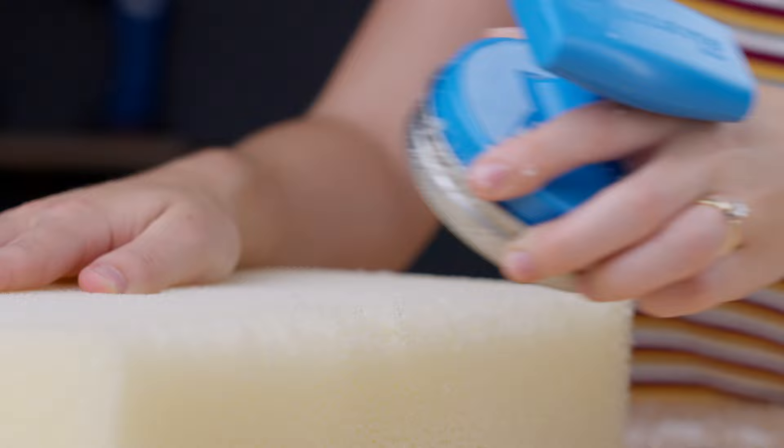This foam shaper shapes seating and upholstery foam including medium and high-density polyurethane as well as closed cell and dry fast foams.